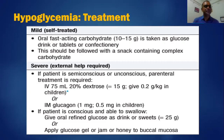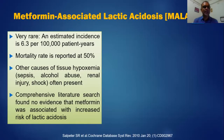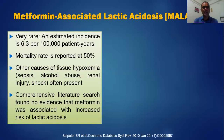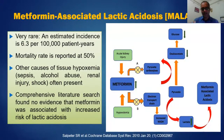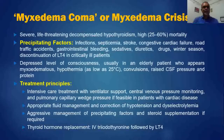Metformin-associated lactic acidosis (MALA) is very rare with an estimated incidence of 6.3 per 100,000 patient years, but is associated with high mortality around 50%. Importantly, metformin is seldom found to cause lactic acidosis alone — other causes of tissue hypoxemia like sepsis, renal failure, shock, cardiac failure, advanced respiratory failure, and alcohol abuse are often present. Comprehensive literature search found no evidence that metformin was associated with increased risk of lactic acidosis in a patient without tissue hypoxemia. Pathophysiologically, metformin blocks pyruvate carboxylase and the electron transport chain, resulting in accumulation of lactate and lactic acidosis.